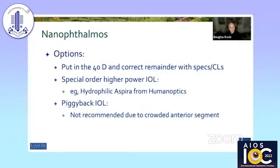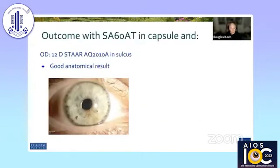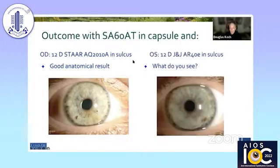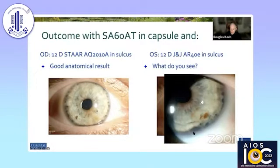Options for these patients include placing a 40-diopter IOL and correcting the remainder with glasses or contacts, or special ordering the lens. I don't recommend a piggyback IOL because of the crowded anterior segment. This is a patient in whom I did a piggyback — a 40-diopter in the bag and a 12-diopter in the sulcus. The first eye did well, but in the second eye, the entire haptic eroded through where an iridoplasty had been done with the argon laser. So I tend to stay away from piggybacks in these patients.